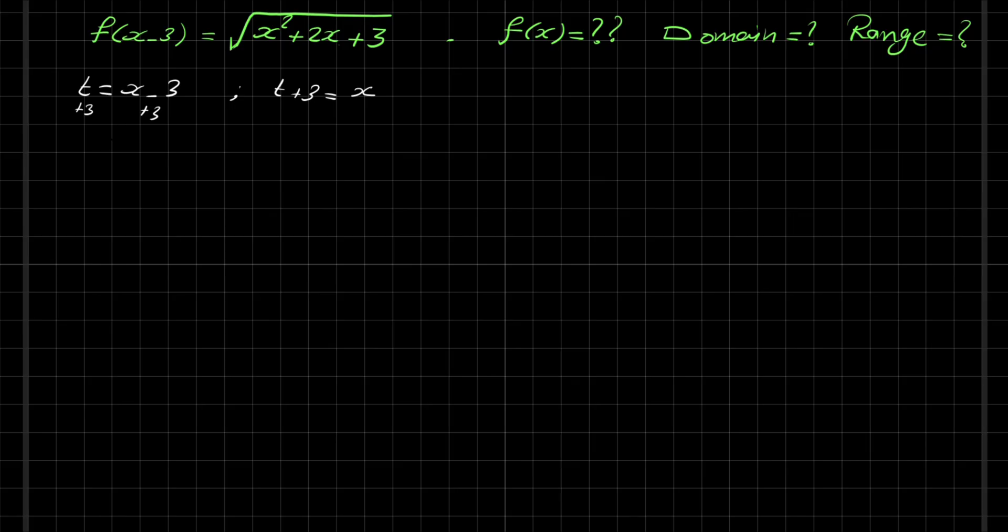Now let's find f(t) in terms of t. So f(t) equals square root of, instead of x, let's replace it by t plus 3. So here x equals t plus 3.